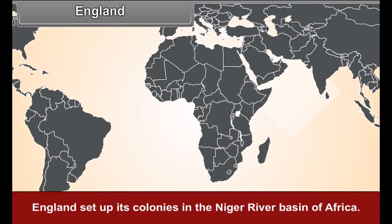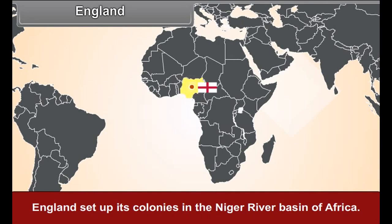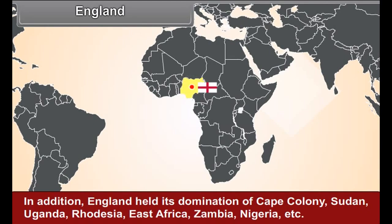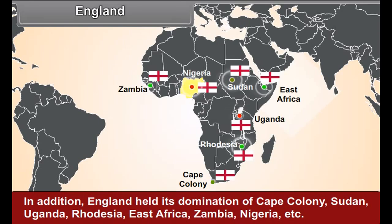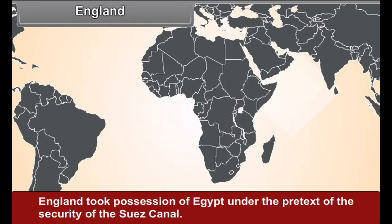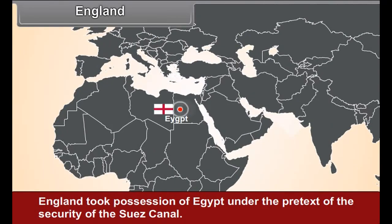England held its domination of Cape Colony, Sudan, Uganda, Rhodesia, East Africa, Zambia, Nigeria, etc. England also took possession of Egypt under the pretext of the security of the Suez Canal.